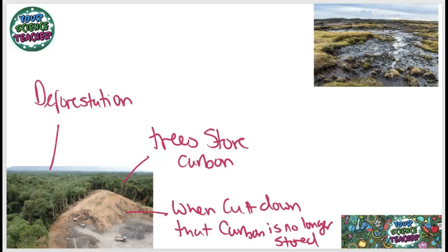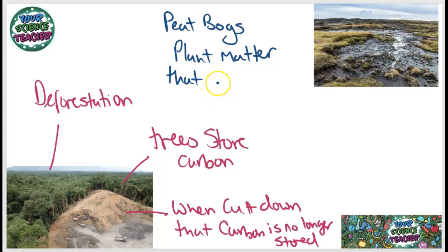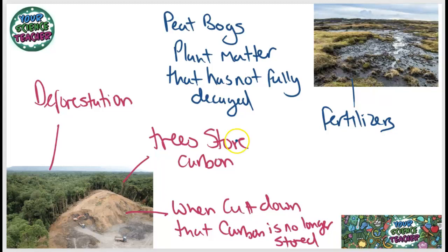As well as deforestation, we are also getting rid of another key carbon store — peat bogs. Peat bogs are basically plant matter that hasn't fully decayed. The reason the plant matter can't fully decay is because peat bogs don't contain enough oxygen for decay to happen. Peat bogs are being removed from environments because we are using them for fertilizers, removing that stored carbon from the ground and spraying it on fields.